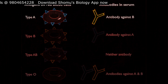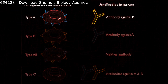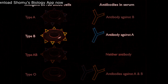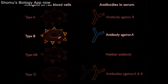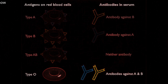The serum of people with type A blood contains antibodies against type B antigens, and the serum of people with type B blood contains antibodies against type A antigens. The type AB serum contains neither antibody, and O serum contains antibodies against both A and B antigens.